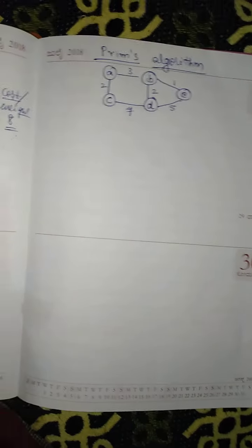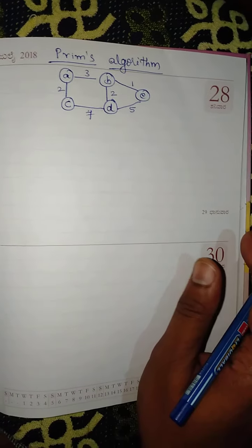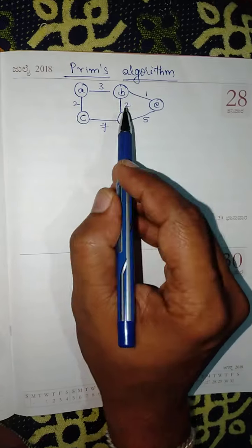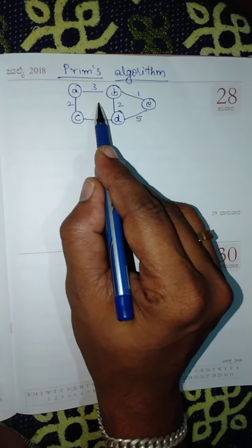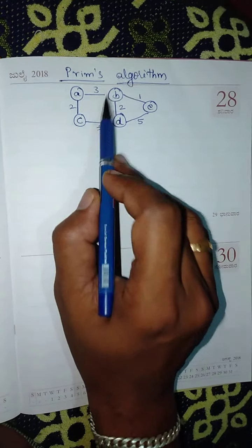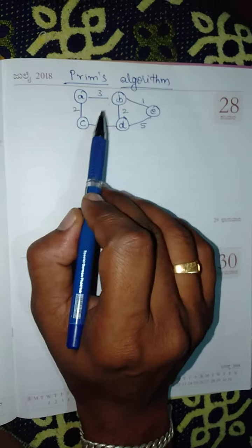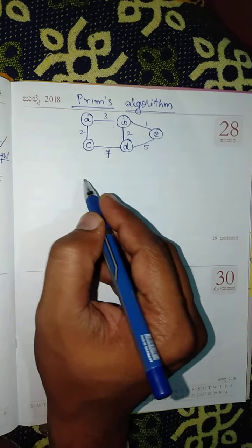We shall now discuss Prim's algorithm for finding the minimum spanning tree of a given graph. First, verify whether this graph is a connected graph — yes, it is a connected graph and it is a weighted graph. Therefore you can find the minimum spanning tree for this graph.